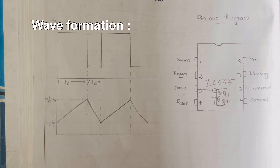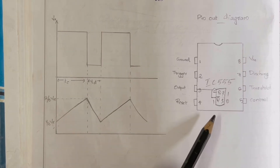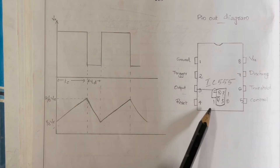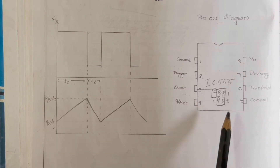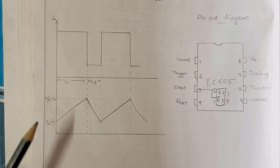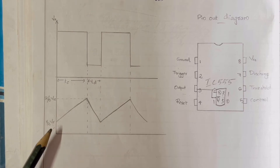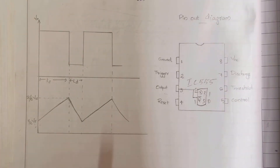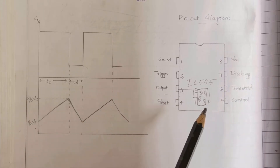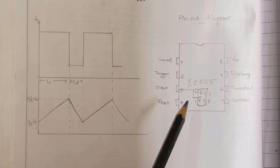Now let's look at the output wave formation. Output terminal pin 3 is internally connected to the inverted output Q-bar of an RS flip-flop. The inputs to this RS flip-flop come from two comparators. When the supply is on and the capacitor voltage reaches one-third of VCC, the capacitor C starts charging. During charging, the flip-flop input is R = 1, S = 0, so Q = 0 and Q-bar = 1. Since Q-bar is connected to the output, the output of the 555 is high during the charging time.